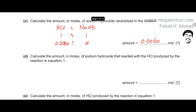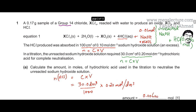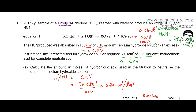Part D asks to calculate the moles of NaOH that reacted with the HCl produced in equation 1. The HCl from equation 1 reacted with NaOH that was in excess. Using n = C × V, we determined that 0.01 moles of NaOH was used in that reaction.